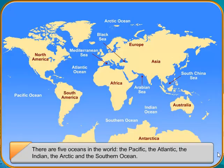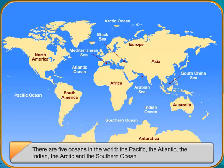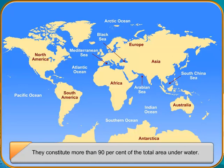There are five oceans in the world: the Pacific, the Atlantic, the Indian, the Arctic, and the Southern Ocean. They constitute more than 90% of the total area underwater.